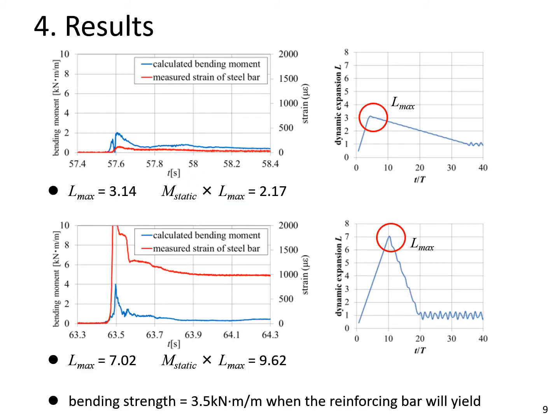Next, the maximum dynamic expansion Lmax, M static, and M static times Lmax are calculated. This figure shows the time series of calculated bending moment and measured strain and dynamic expansion when regular waves collide. The bending moment is the value at 0.5 meters from the top and calculated from the measured pressures. M static is decided as the bending moment when the pressure at 0.1 meters from the top becomes constant after peak.